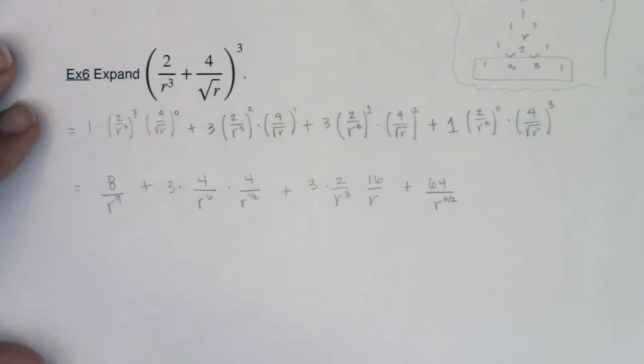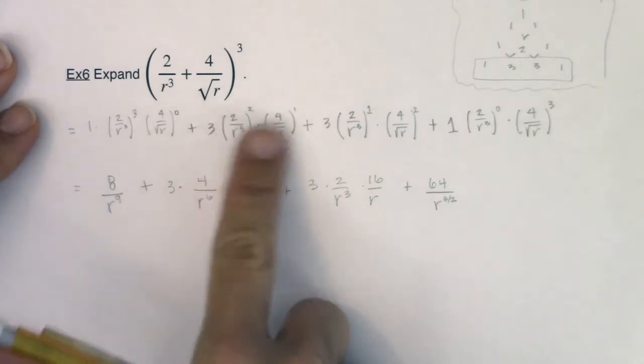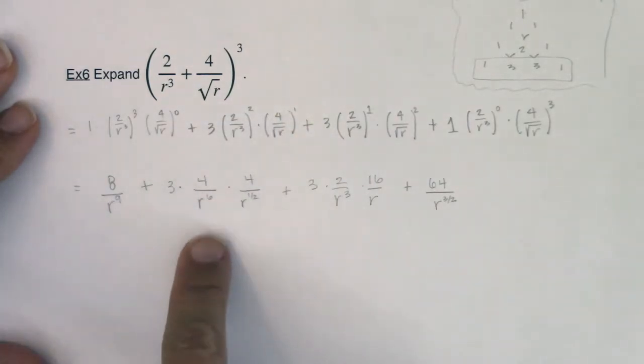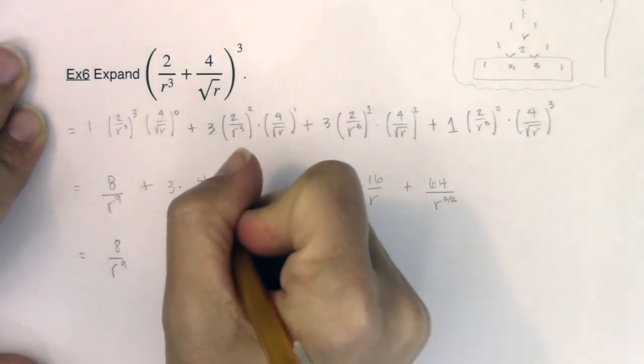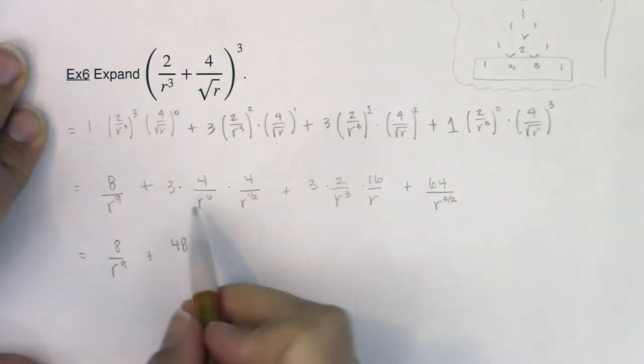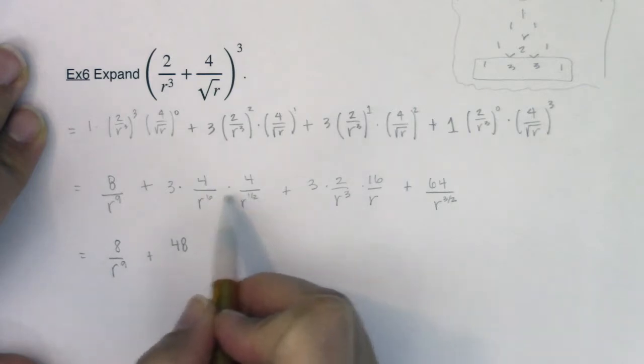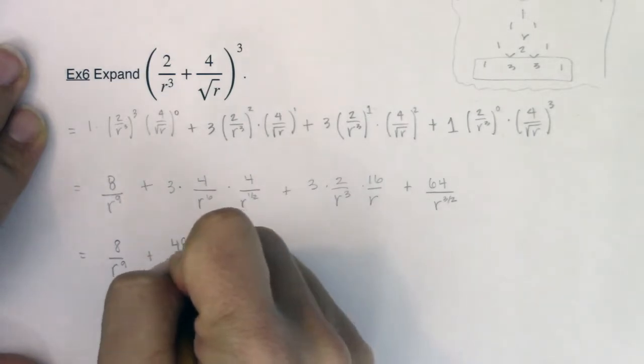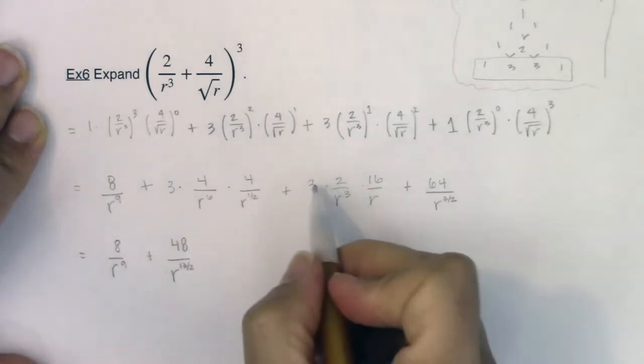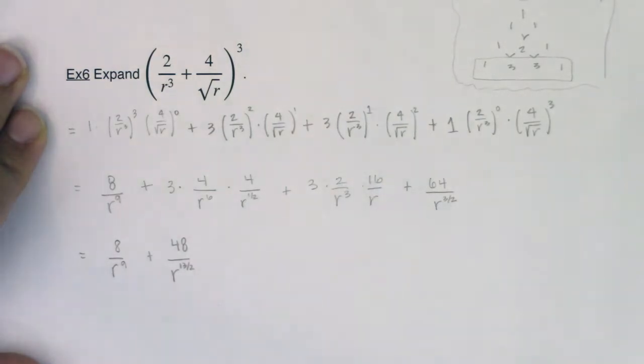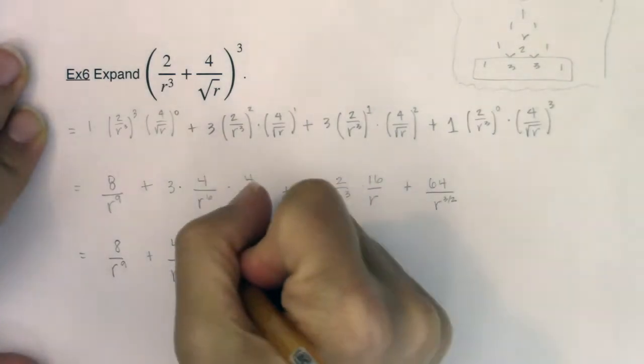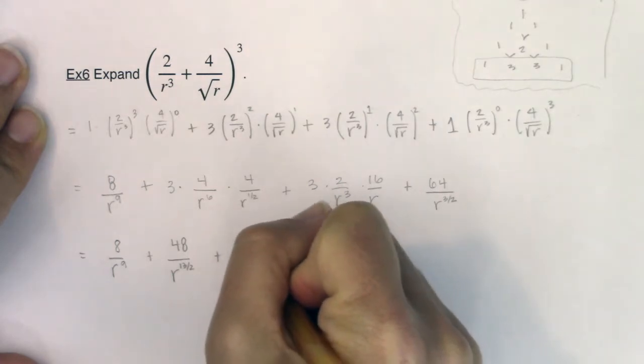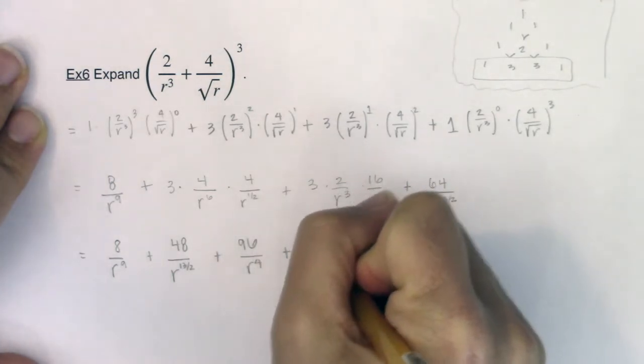So now I'm going to go through and really simplify this. I was trying to do it all at once and then it was just too much. You saw me kind of trying to do this in my head all at once and I said, you know what, it's just too much. Let me go ahead and break this up into two steps. So here we go. This was fine. This was 8 over r to the 9th. 3 times 4 is 12. 12 times 4 is 48. If I had r to the 6th times r to the 1 half, I'm going to add the powers. Well, 6 plus 1 half is 6 and a half, but I'm going to rewrite that as a rational exponent. So I'm going to say that's r to the 13 halves. 3 times 2 is 6. 6 times 16, let me go to my calculator for that one. 6 times 16 is 96. r cubed times r is going to be r to the 4th, plus it looks like we had 64 over r to the 3 halves.